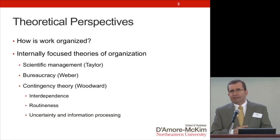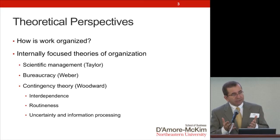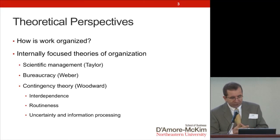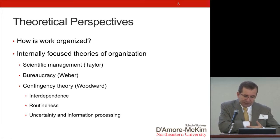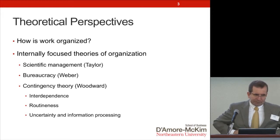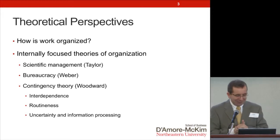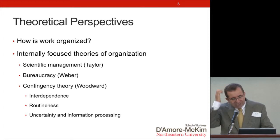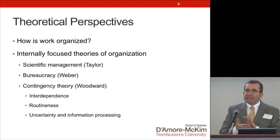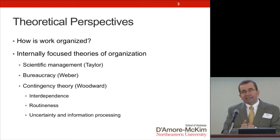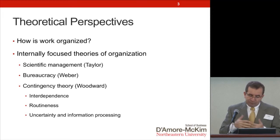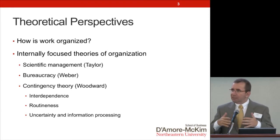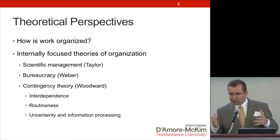Around the same time, Weber developed the ideas around bureaucracy. Weber claimed that bureaucracy was the most efficient, ideal form of organization — the best form of collaboration — because of the way it processed information. As you know, bureaucracy has clear lines of control, spans of control, and so forth.